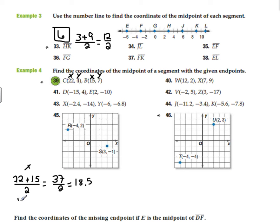My y would be 4 plus 7 divided by 2 equals 11 divided by 2, which equals 5.5.